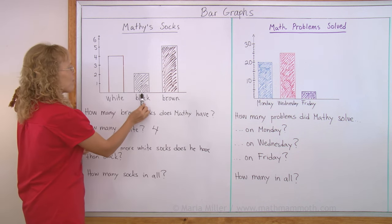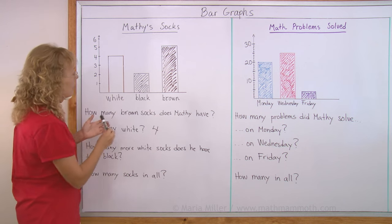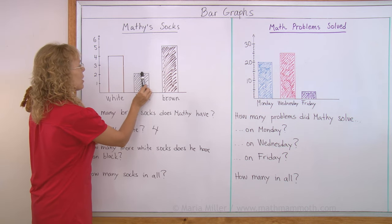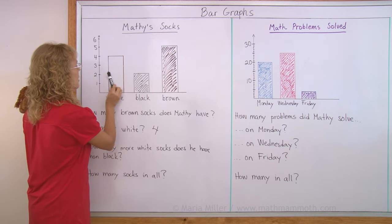And then black, how many black socks does he have? Can you tell? Go to the top of the rectangle, then go this ways. Two. Two black socks.